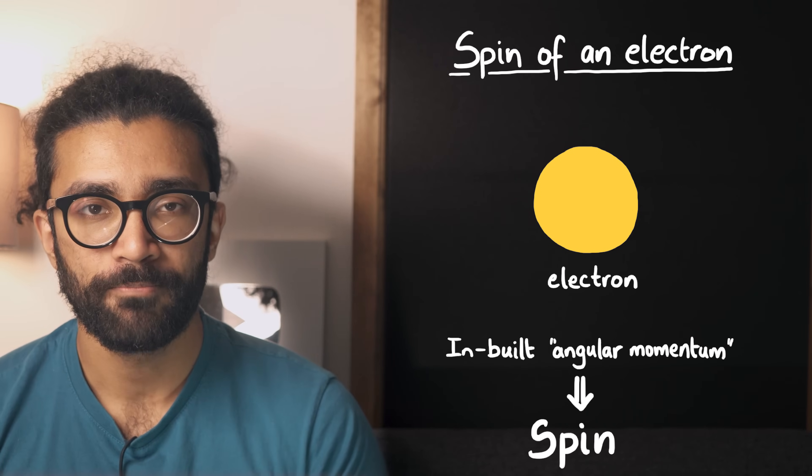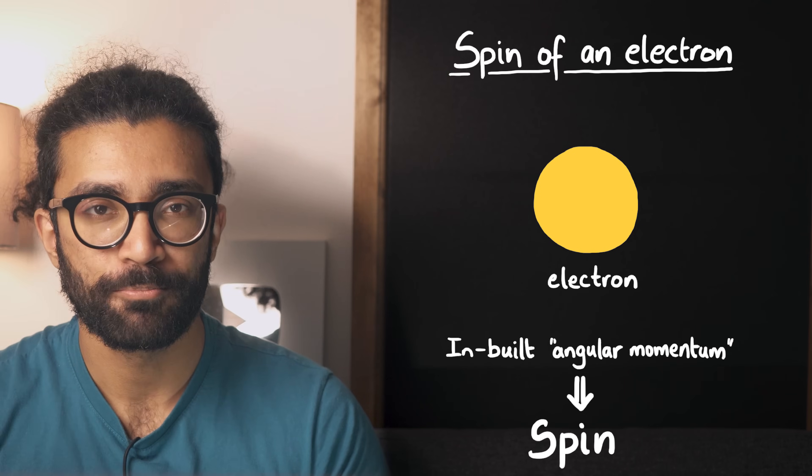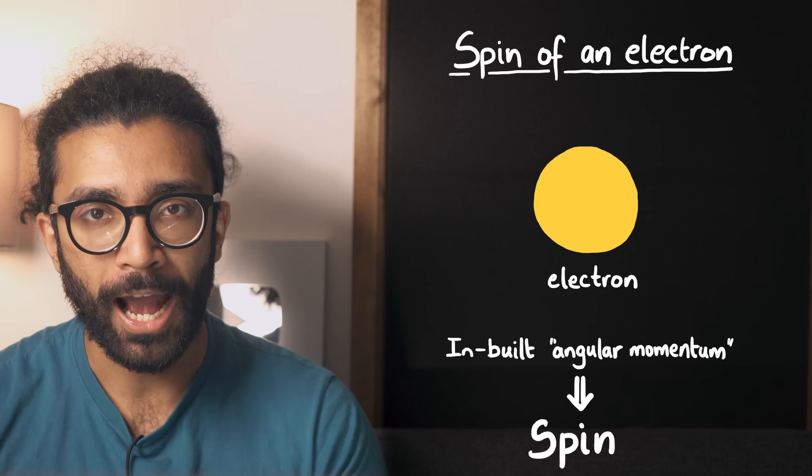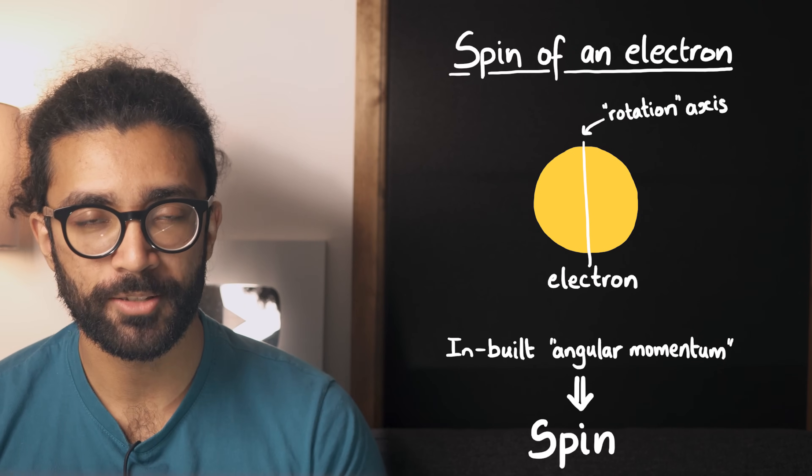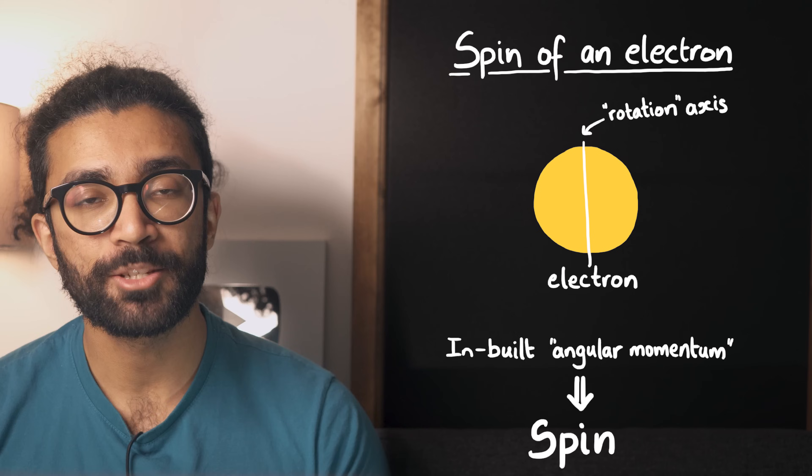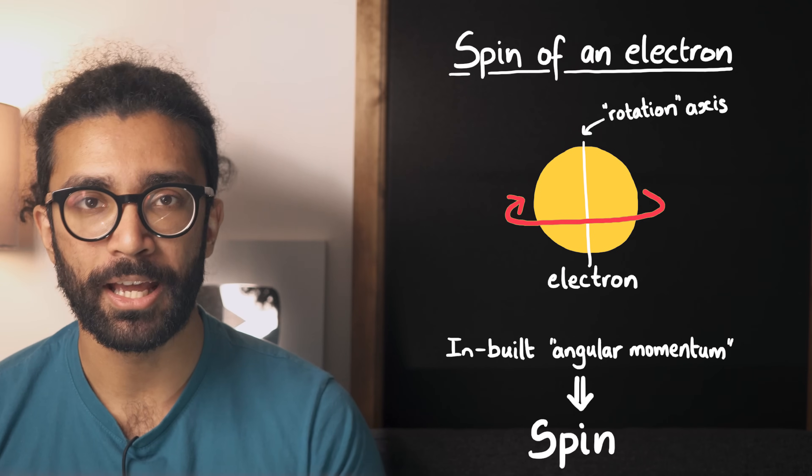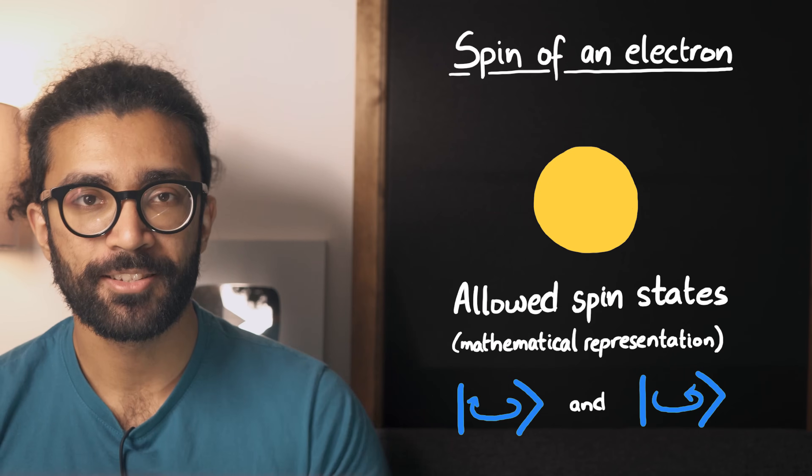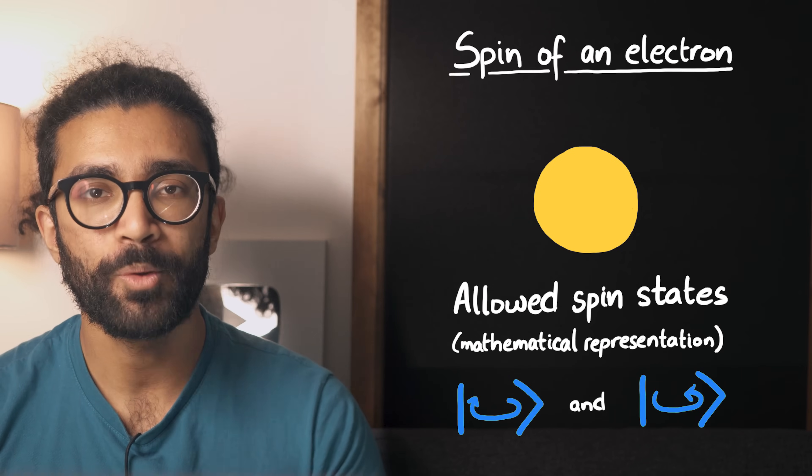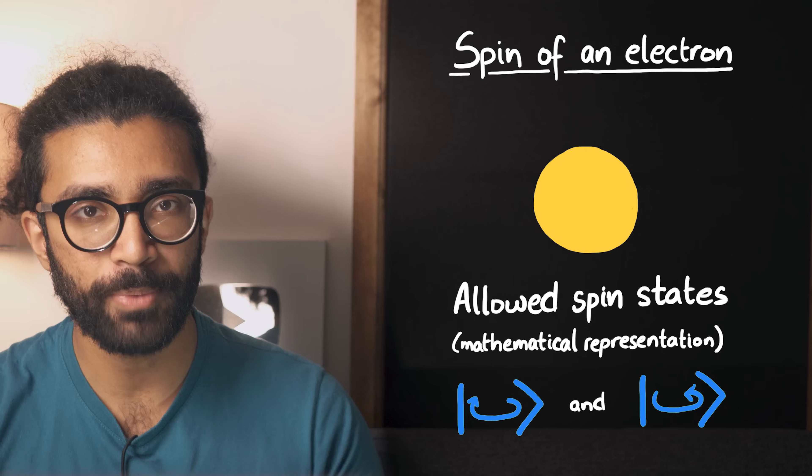For an electron, the amount of spin it has is fixed. But if we measure how the electron is spinning in this direction, then we could find one of two results. Either it behaves like it's spinning clockwise, or it behaves as if it's spinning anticlockwise. These are the two allowed states we could find our electron in when we make a measurement to find its spin.